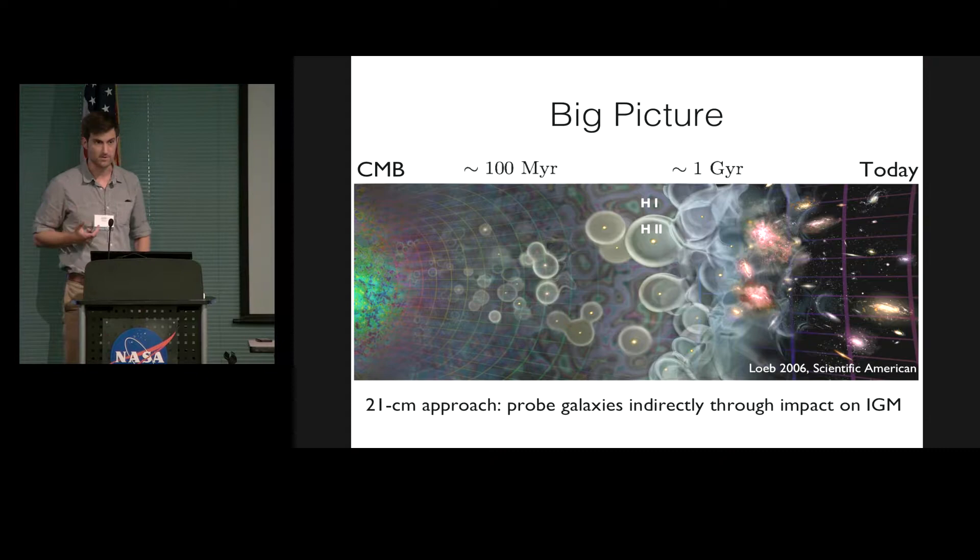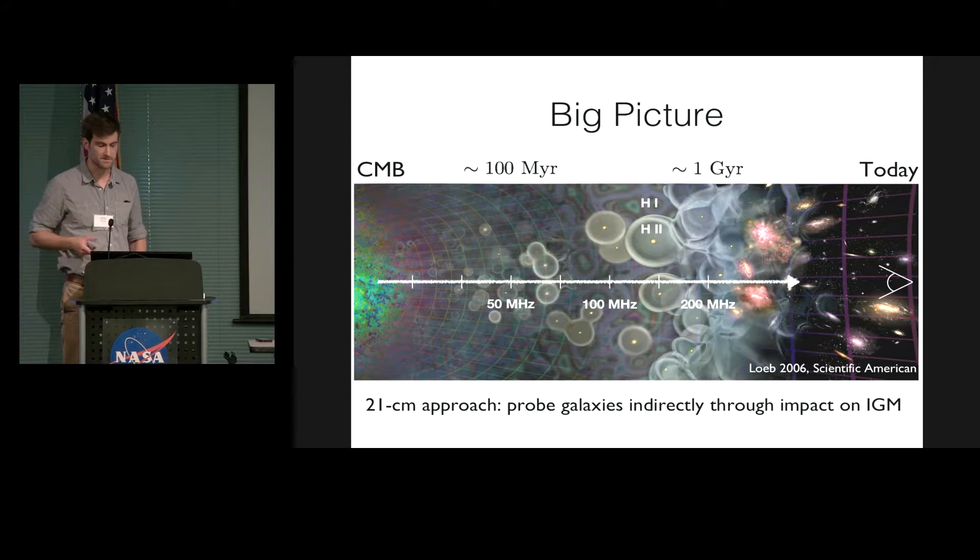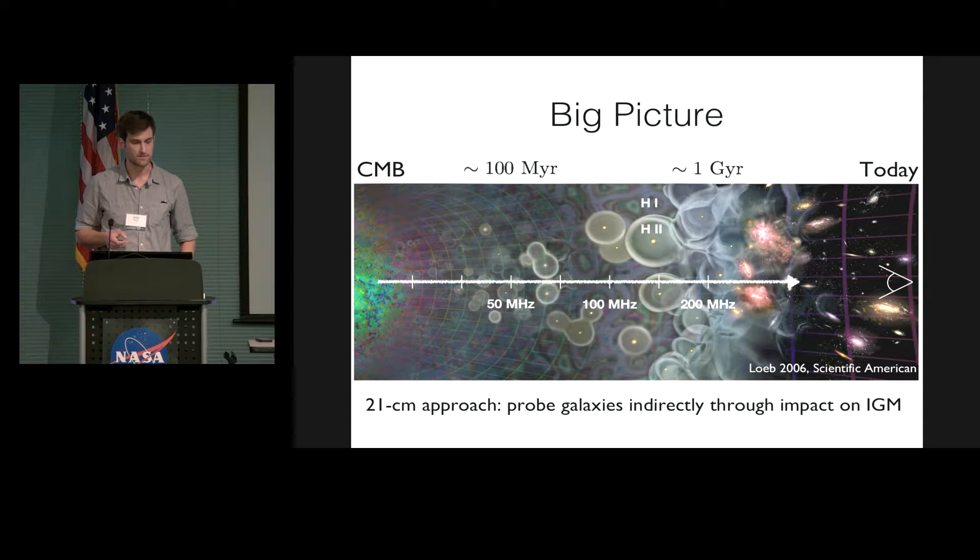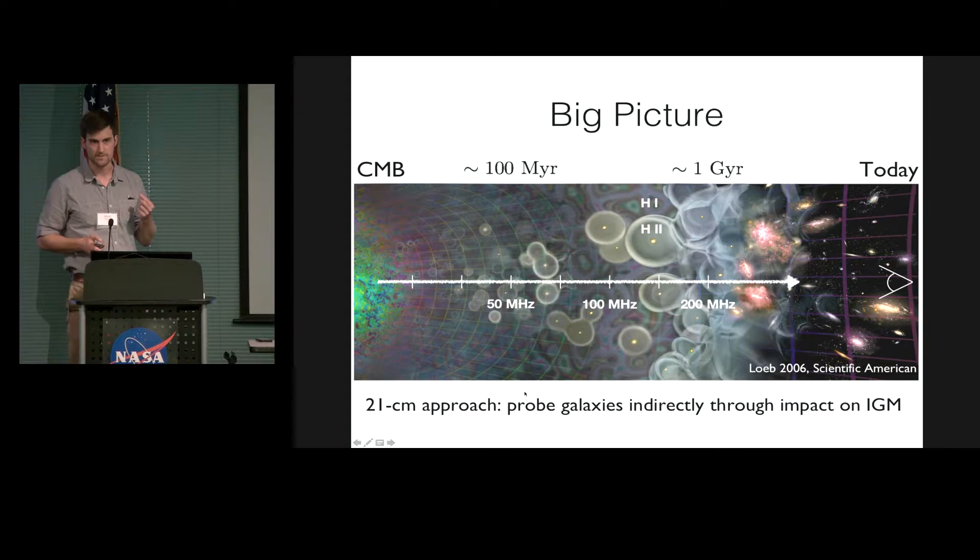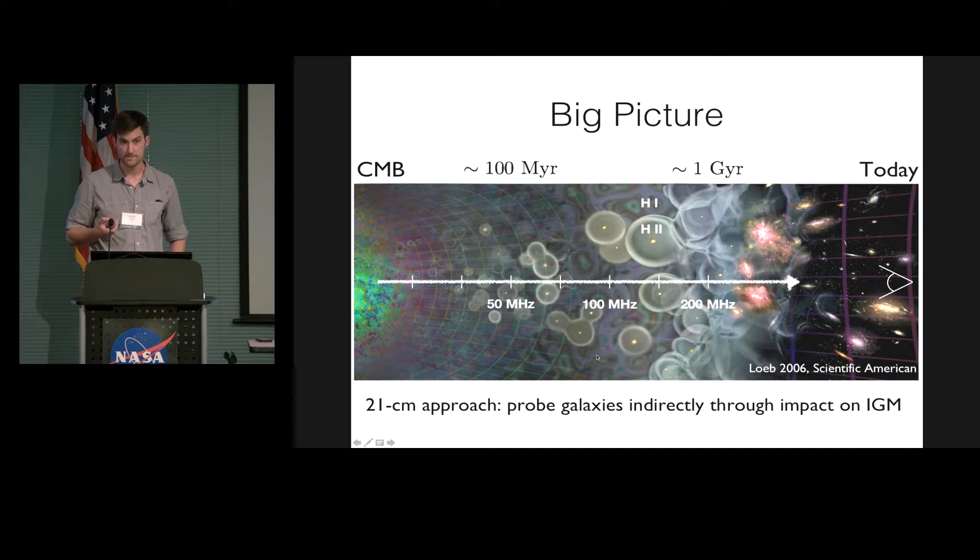So the whole game in this field is to try to learn about structure formation in the early universe through studying the intergalactic medium, because it's just difficult to see the sources themselves. And now, in principle, you could try to make maps of this field of bubbles, and people are trying to do that. In my talk today, I'm going to be talking about this global 21-centimeter signal, which is ignoring the spatial dimension here, and just leveraging the fact that we're studying a line, which means that each observed frequency maps back onto a unique time in the universe's evolution. So as we tune our telescopes to lower and lower frequencies, we're seeing higher and higher redshifts or earlier and earlier times in the universe.